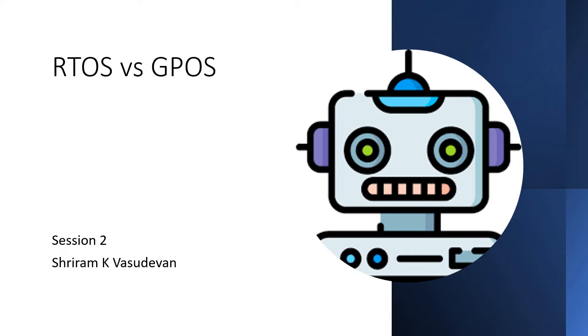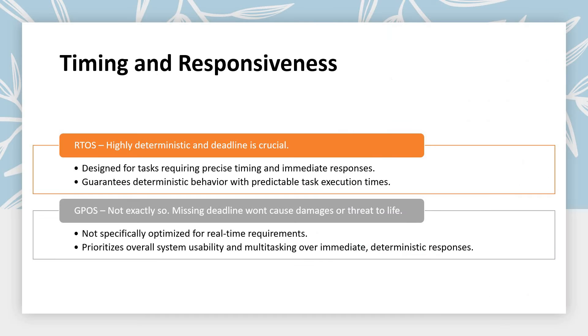And in this session, we are getting a little deeper with understanding the differences between real time operating system and general purpose operating system. That is going to be interesting and easy to understand.